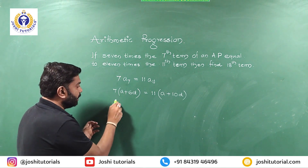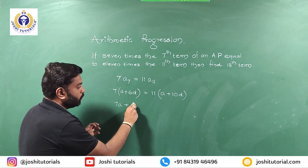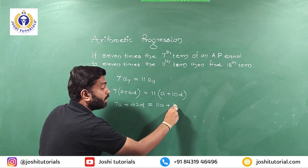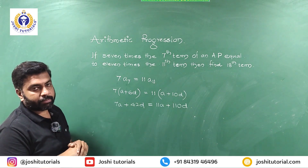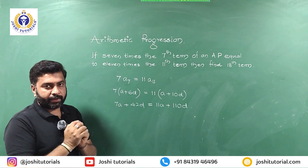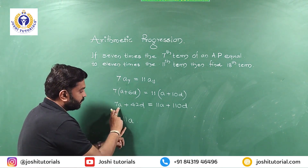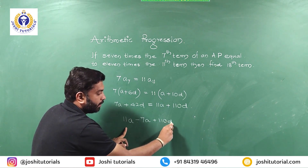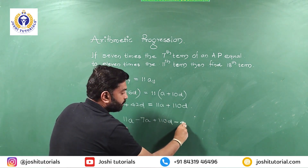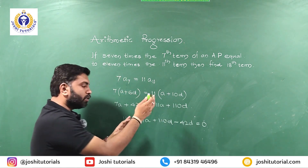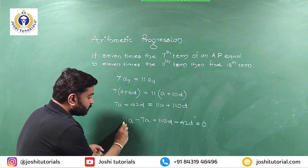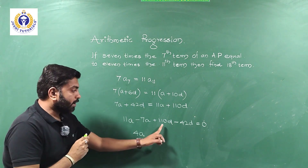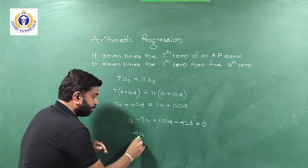Expanding: 7×(a + 6d) = 7a + 42d, and 11×(a + 10d) = 11a + 110d. Setting them equal: 7a + 42d = 11a + 110d. Bringing all terms to one side: 11a − 7a + 110d − 42d = 0, which gives 4a + 68d = 0.